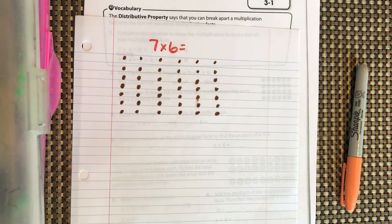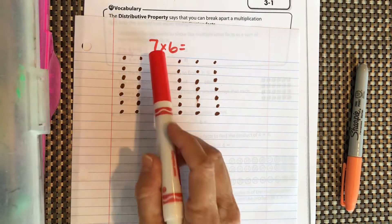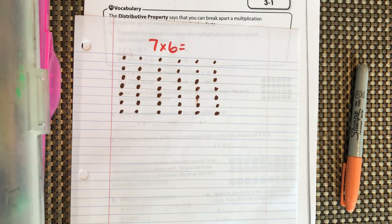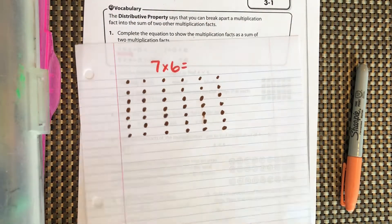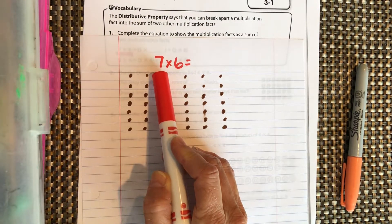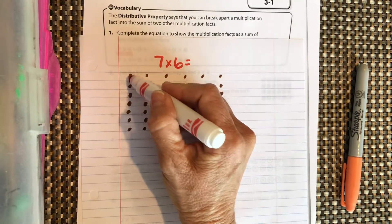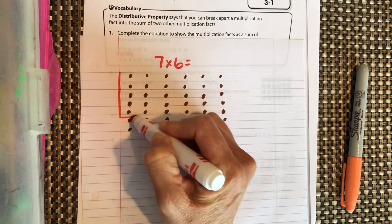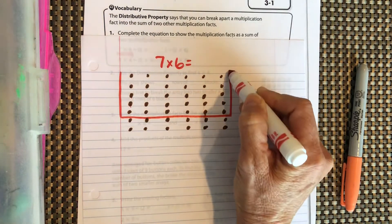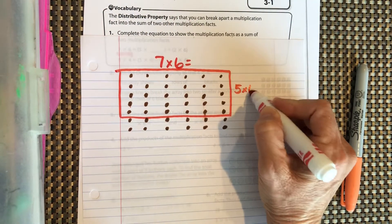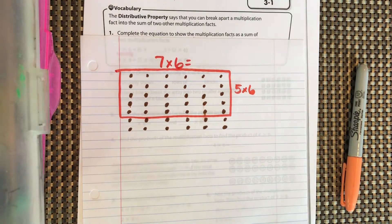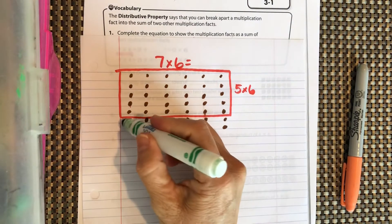We want to know what 7 times 6 is, so we can break it up — we'll leave the 6 the same and break the 7 into groups. I always love to break things up into 2, 5, or 10 because those are the easiest to multiply. So 7 is 5 plus 2 — let's break this up into 5 groups of 6 and 2 groups of 6.